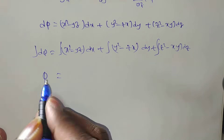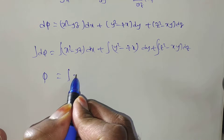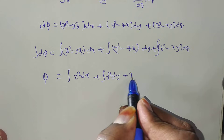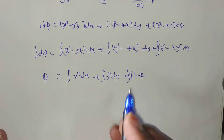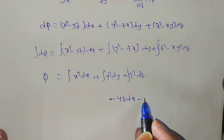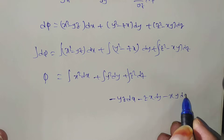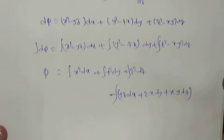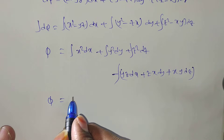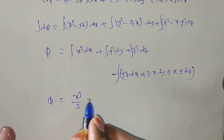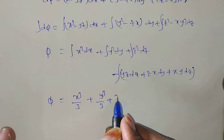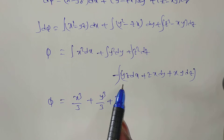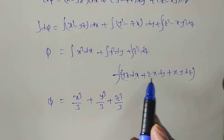This equals π(x,y,z). We can separate it as: ∫x²dx + ∫y²dy + ∫z²dz, minus a grouped integral of yz·dx + zx·dy + xy·dz. Taking minus as common, we observe that yz·dx + zx·dy + xy·dz is the exact differential d(xyz). So by inspection, the mixed terms integrate to xyz.